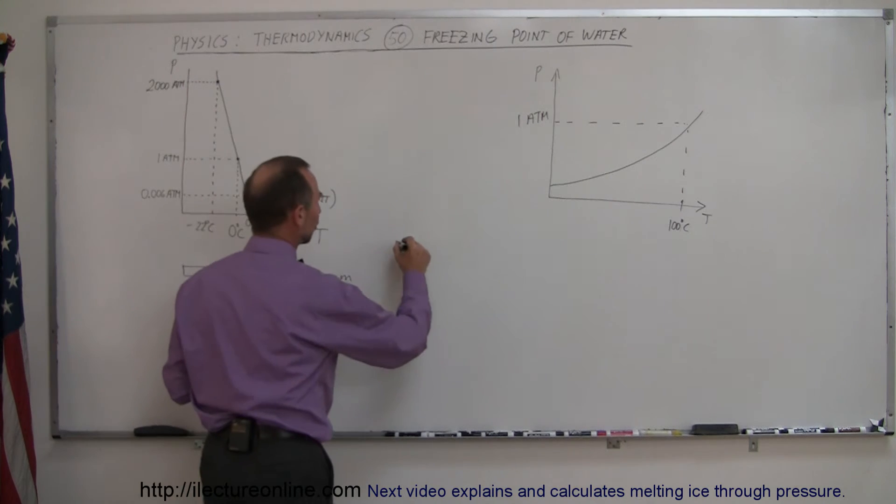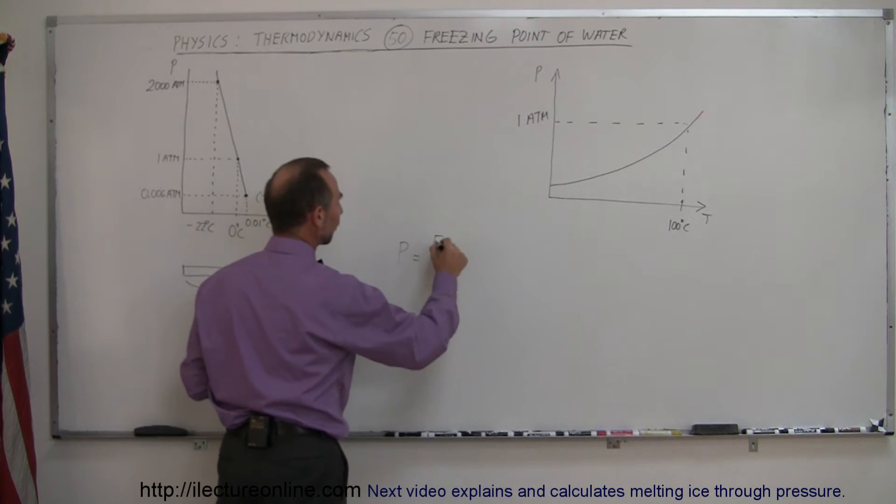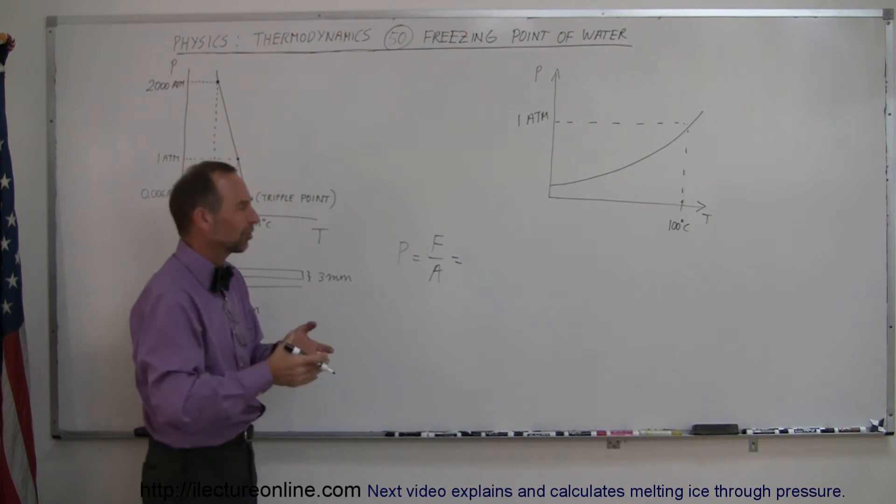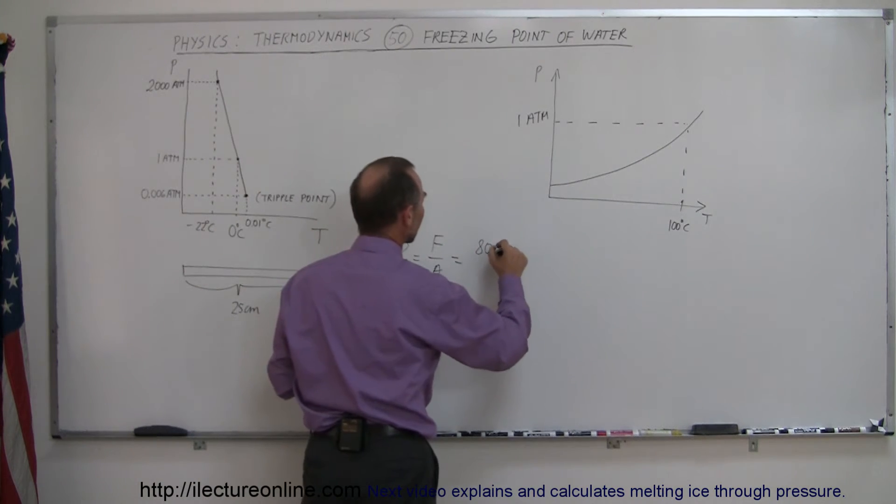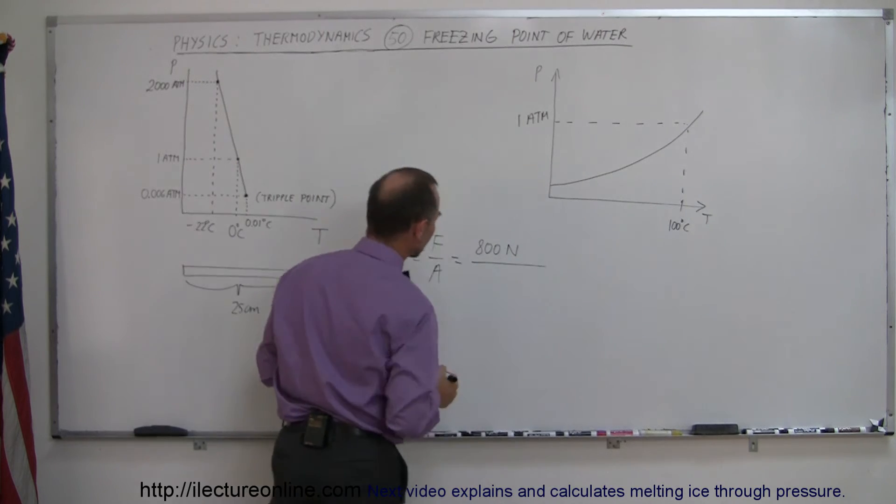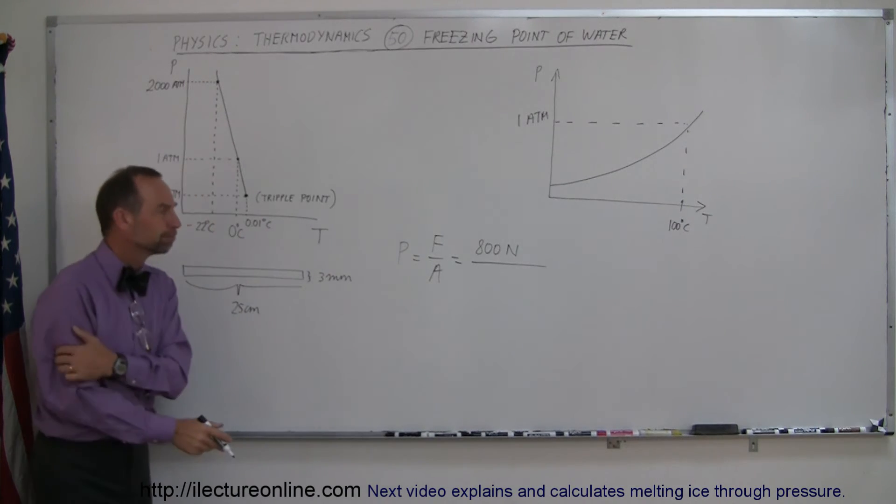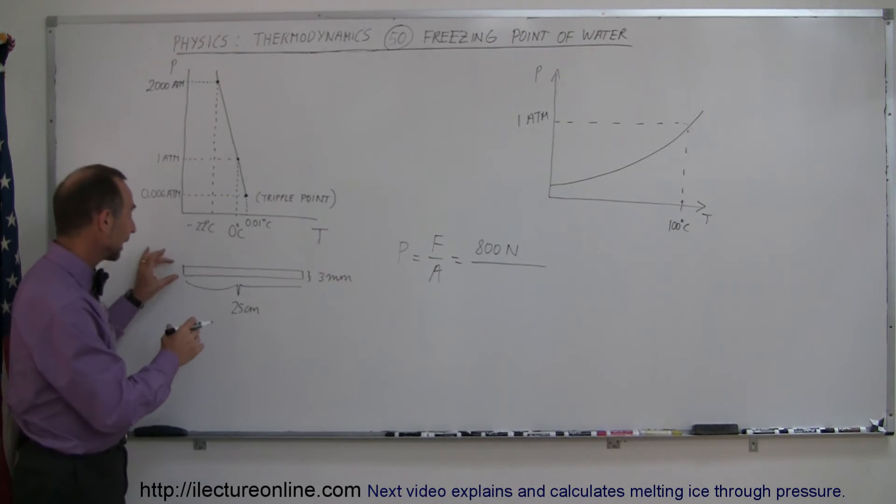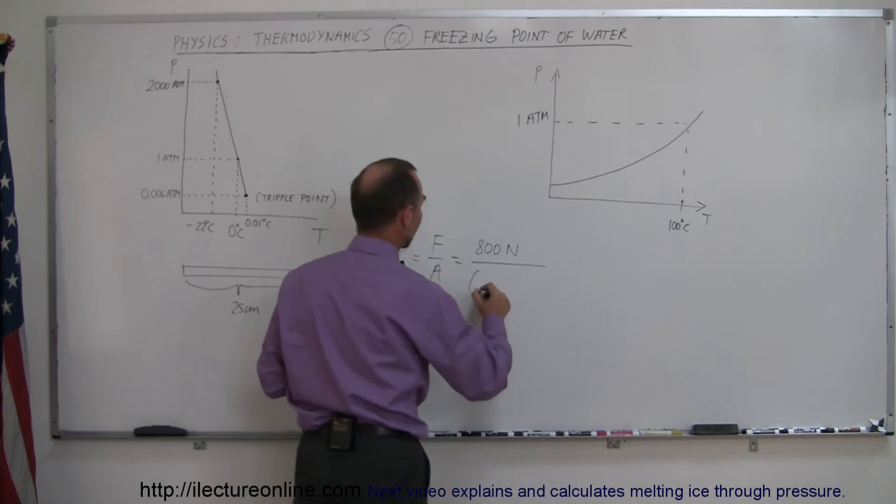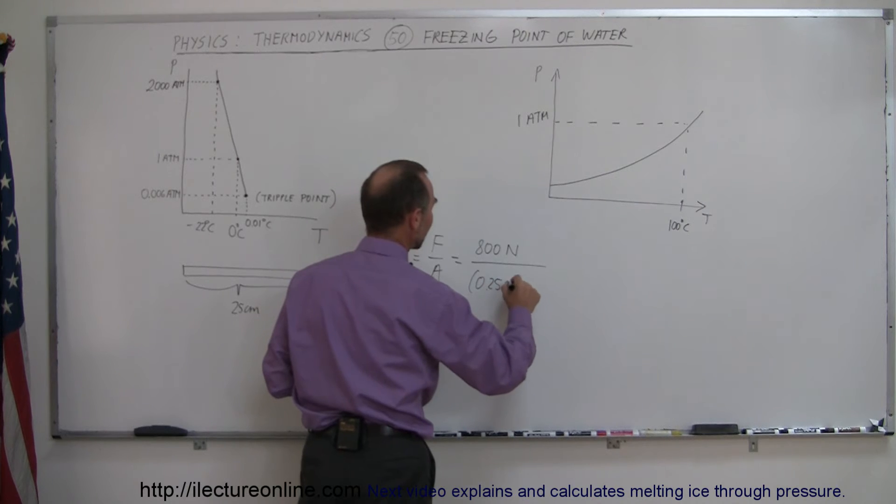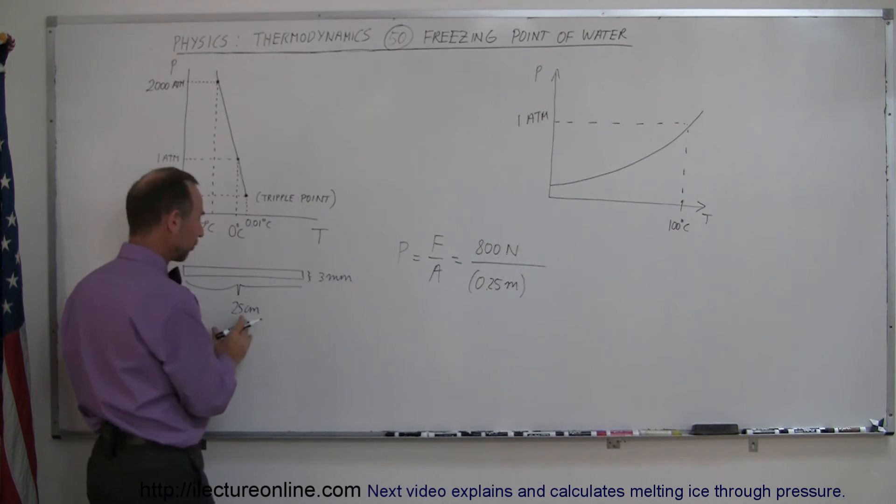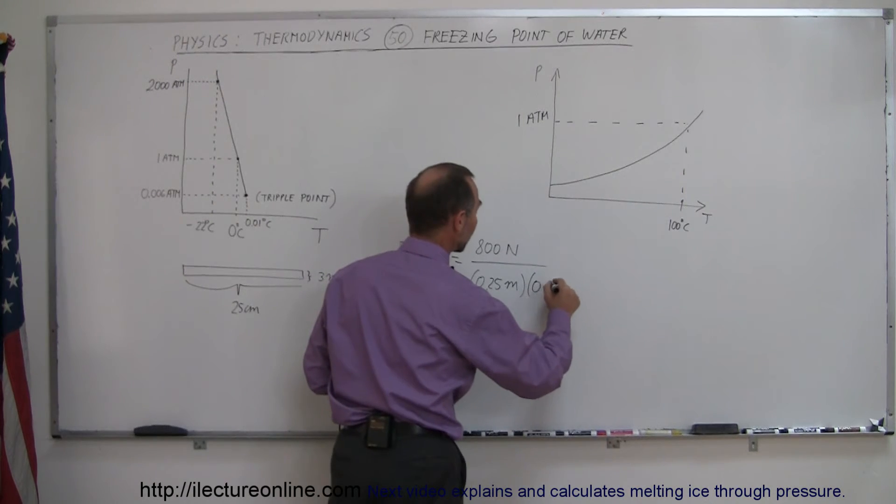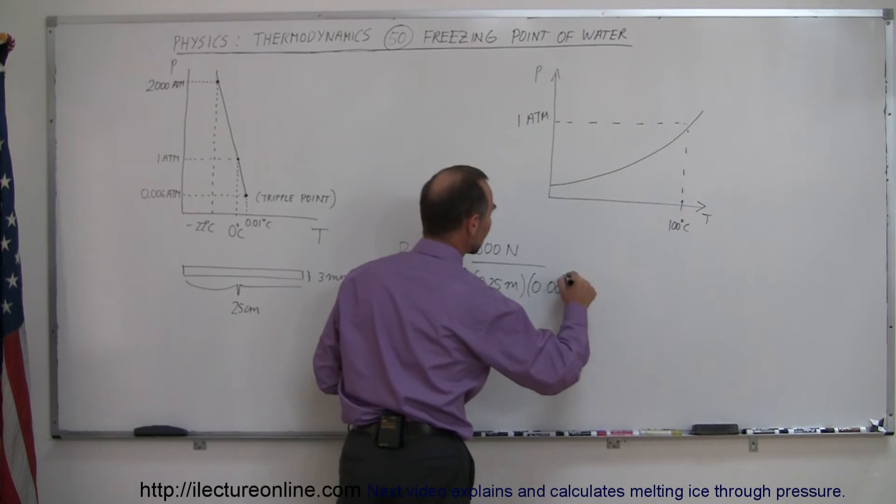And so we know that the pressure is equal to the force divided by the area, and the force of course would be the weight of a person, let's say the person has a weight of about 800 Newtons, that's maybe somewhere around 160 pounds or so. And the area of course would be the length times the width, so that would be 0.25 meters, because 25 centimeters converted to meters is 0.25 meters, and three millimeters converted to meters is 0.003 meters.